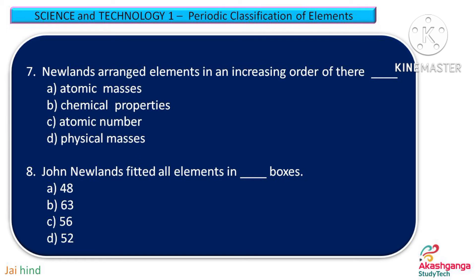Question 8. John Newlands fitted all elements in … boxes. Option A: 48, Option B: 63, Option C: 56, and Option D: 52.